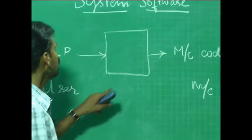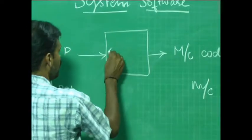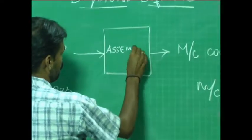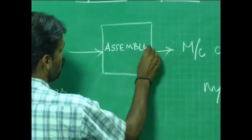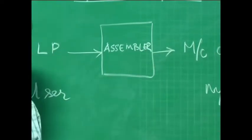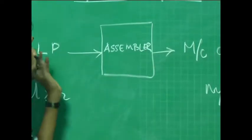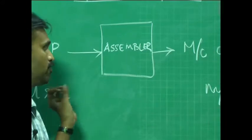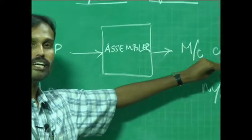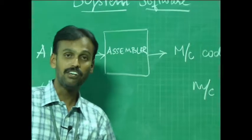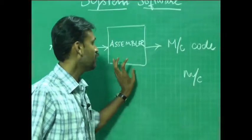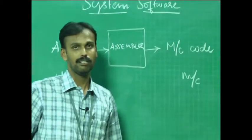This translator is called an assembler. An assembler is a system software that takes as input a source program written in assembly language and converts the entire source program into machine language. This is the main functionality of an assembler.